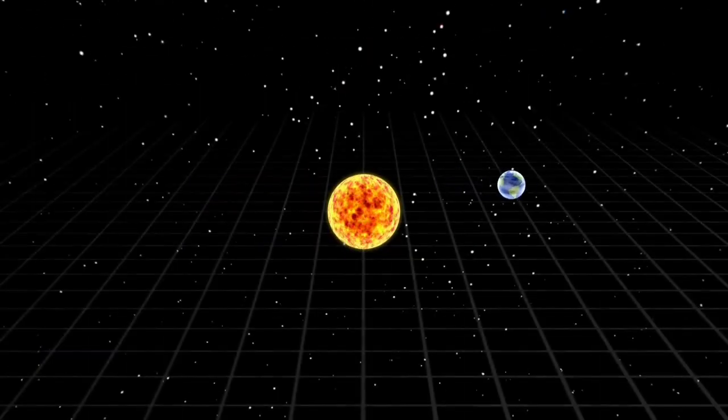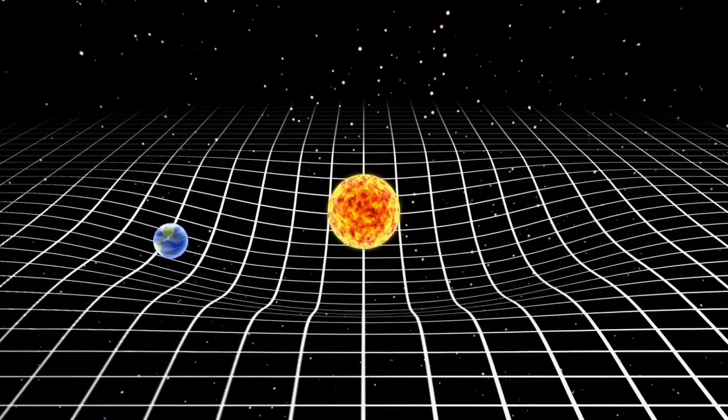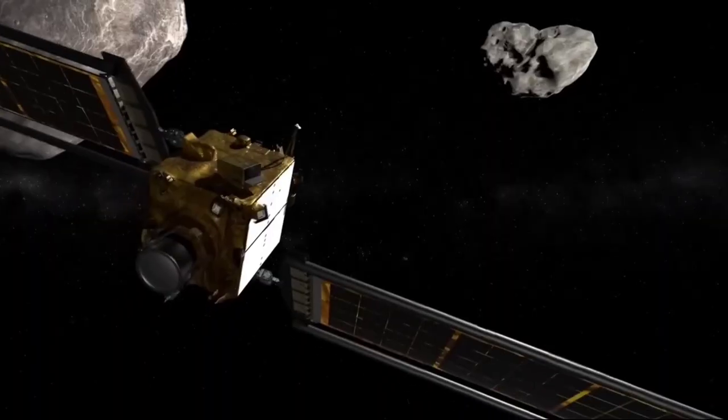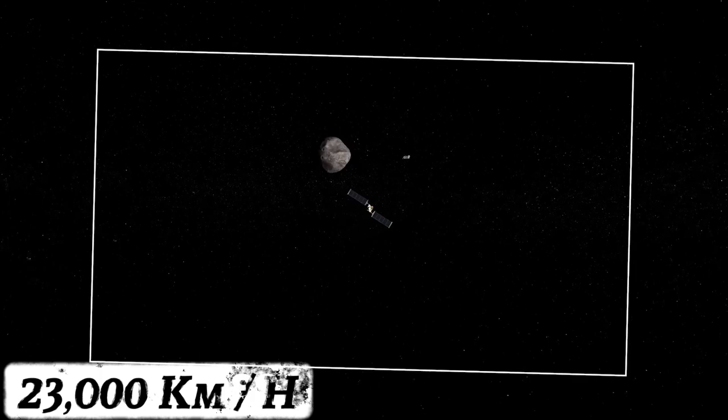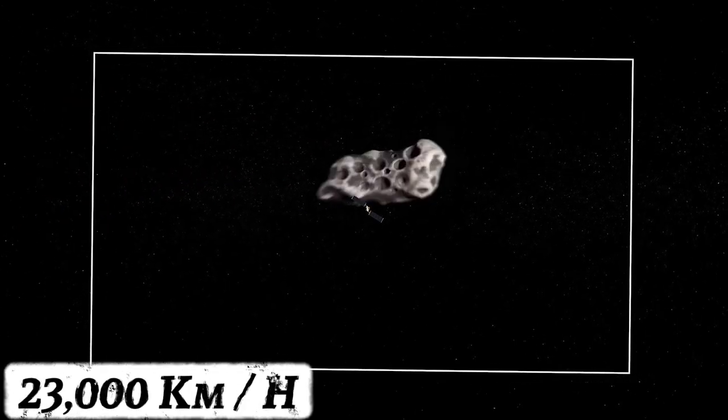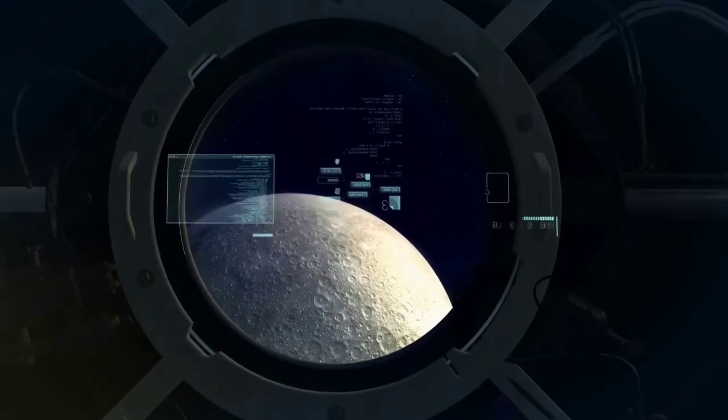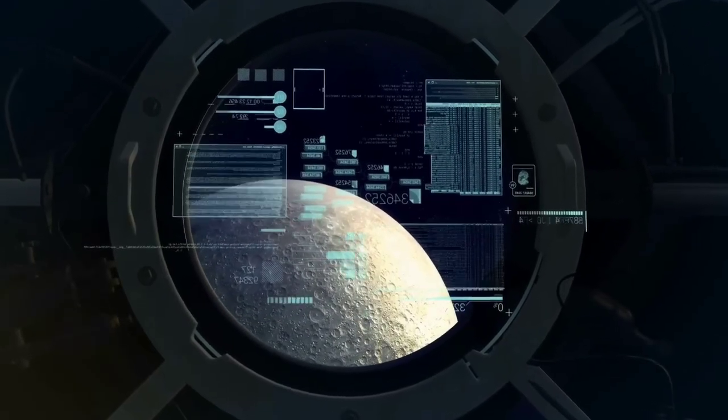When it comes to space physics, speed is more crucial than weight. NASA scientists performed complex calculations and found that if the DART spacecraft hit Dimorphos at a speed of 23,000 kilometers per hour, it would change Dimorphos' direction by 1%.